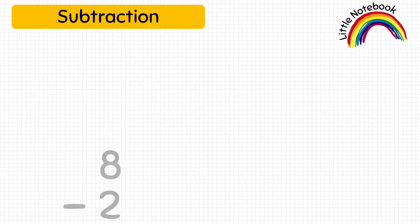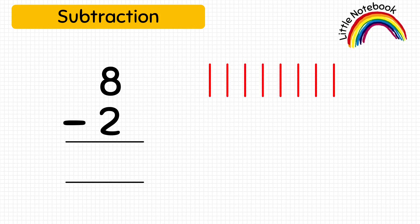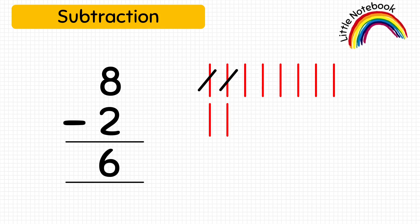Next question: eight minus two equals how much? Let's draw eight lines to represent eight, then draw two lines to represent number two. To subtract, let's cross out two lines from the eight and count the remaining lines — one, two, three, four, five, six — so eight minus two equals six.